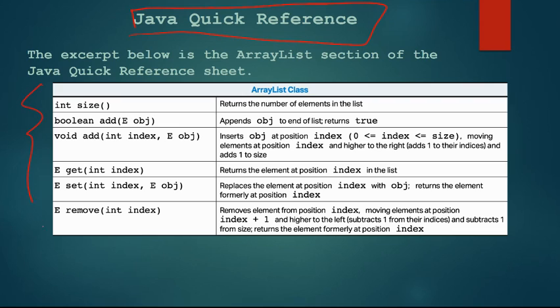In this video we're just going to look at the array list excerpt of the quick reference guide. Notice it has 1, 2, 3, 4, 5, 6 methods that are listed here. Size, add, add with two parameters, get, set, and remove.